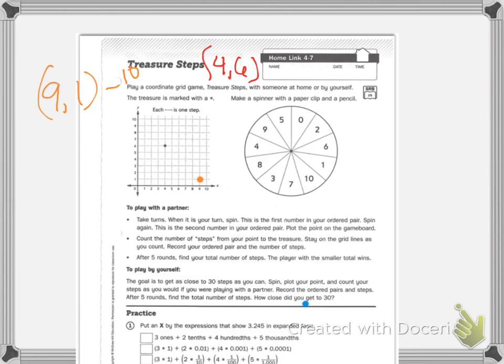Now let's say I spin 10 and 6. My next one, 10, I'm going to go up 6. Now I'm only 6 away. So here's my, I'm only 6 away from the treasure.